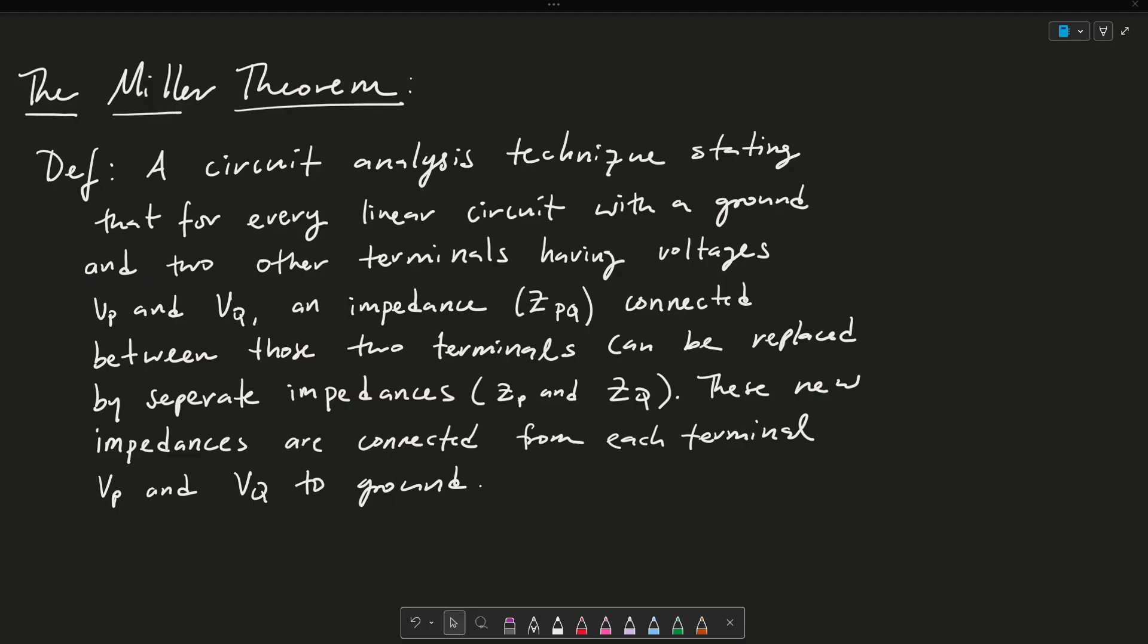So to formally define Miller's Theorem, we're going to state that it is a circuit analysis technique that states that for every linear circuit with a ground, and two other terminals having voltages VP and VQ, so I have a voltage VP here and a voltage VQ here, and an impedance ZPQ, so this is my impedance connected between those two terminals.